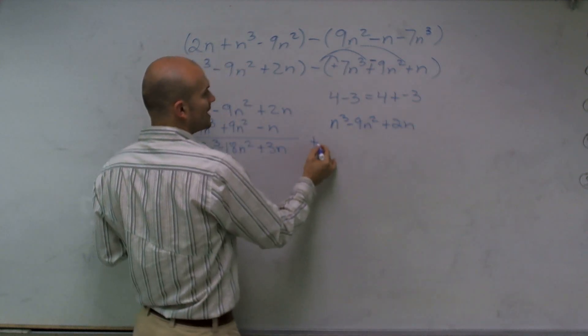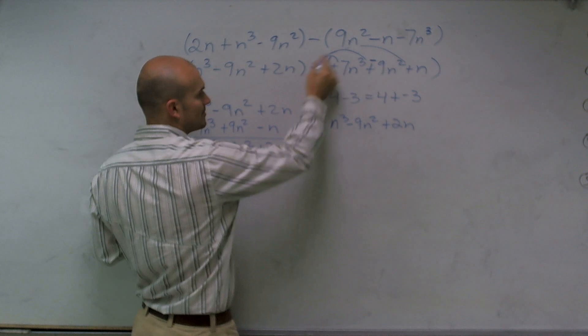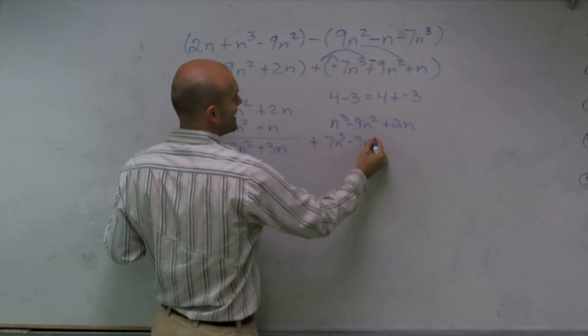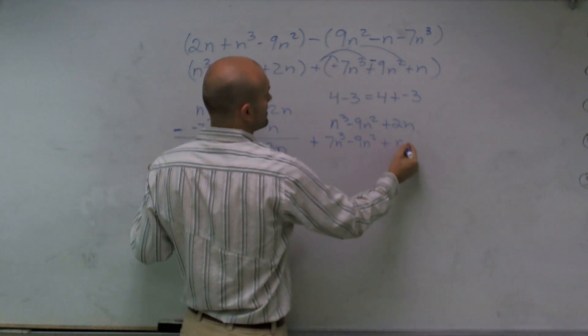Now plus, as I distribute plus, a 7n cubed minus a 9n squared plus n.